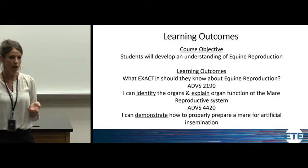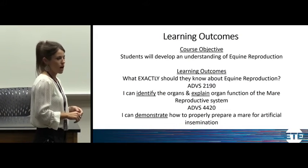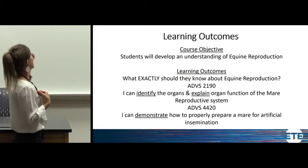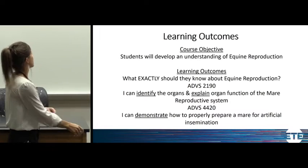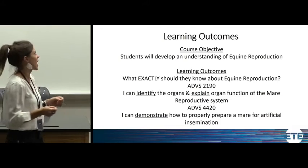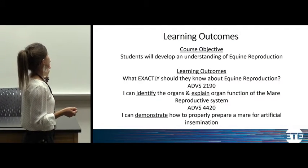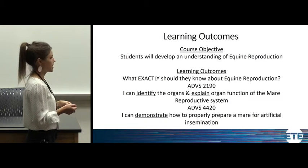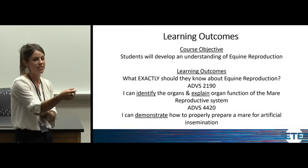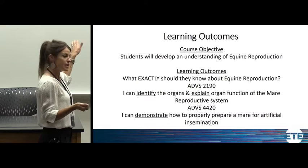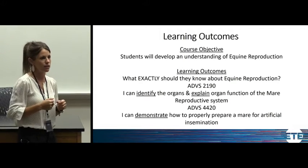The course objective is a really broad statement that you might see on both my syllabus and Dr. Vanderwall's who teaches the 4420 course. But looking at our learning outcomes — where we get very specific and measurable, with the verb underlined — in my course the outcome is 'I can identify the organs of a mare's reproductive tract and explain what each organ does.' In the applied equine reproduction course, the outcome is 'I can demonstrate how to properly prepare a mare for artificial insemination.' That course requires students to actually go out and do those things, representing a higher cognitive demand on Bloom's Taxonomy.